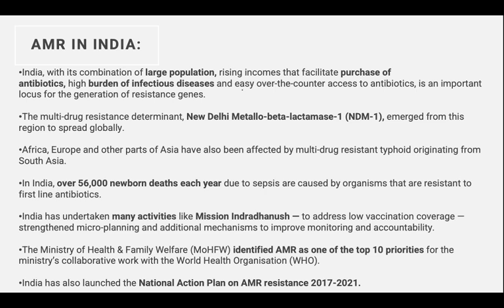Now if we talk about India, what is the status of antimicrobial resistance in India? We can say clearly that India, with its combination of large population and rising incomes that facilitate purchase of antibiotics, has a major problem. In India, antibiotics are very easily available because generally we don't need a prescription - we can buy over-the-counter antibiotics very easily. This results in a high burden of infectious diseases, and as antibiotic consumption increases, the chances of AMR developing also keep increasing.